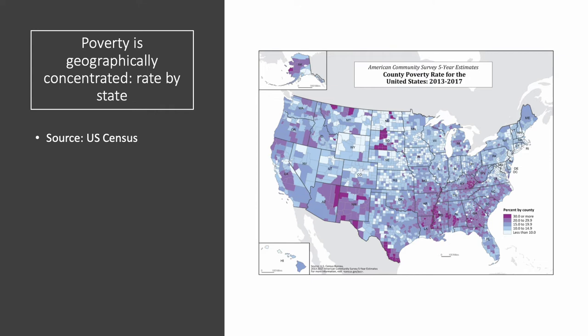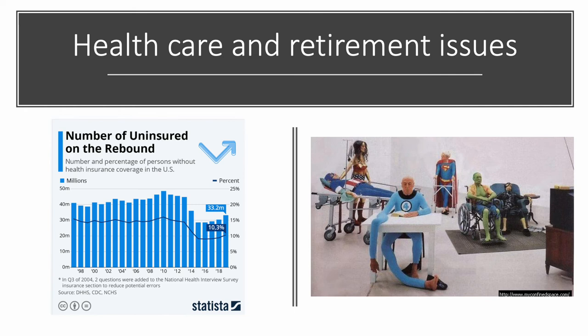Poverty is also regionally concentrated. Looking at the census map, the darker the purple, the higher the rate of poverty. There is more poverty in the South. The dark purples you see in the West and up in the Dakotas are on reservation lands — Native American tribal lands where poverty is very high. Along the Mexican border there's also a lot of poverty. Much of it is rural poverty. In the big cities of the North and West, poverty rates are lower, and these programs have lifted many people out of poverty or at least ameliorated the worst effects.